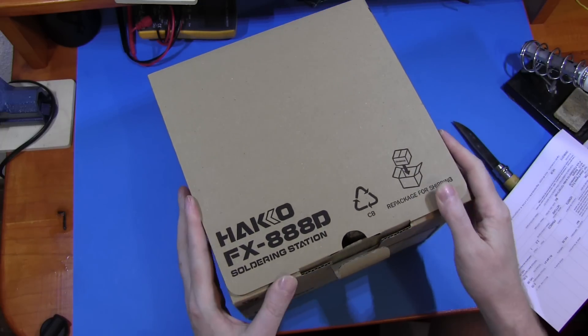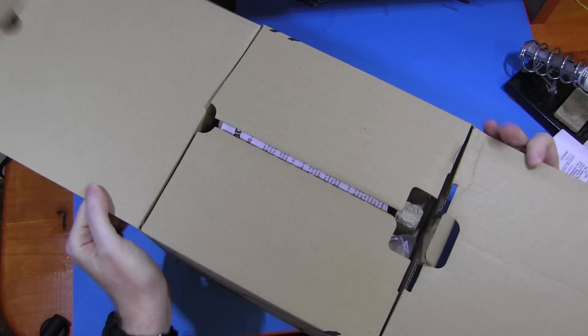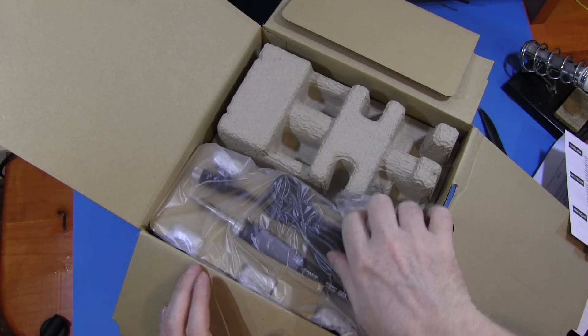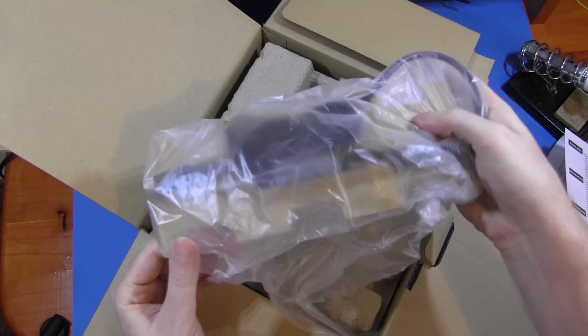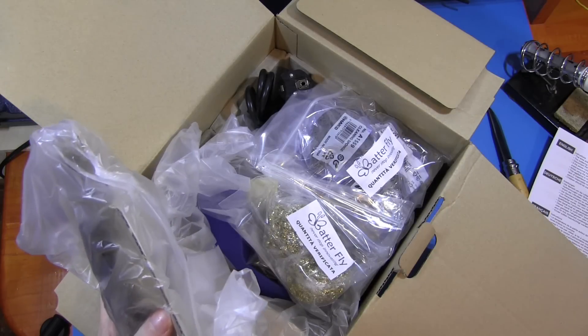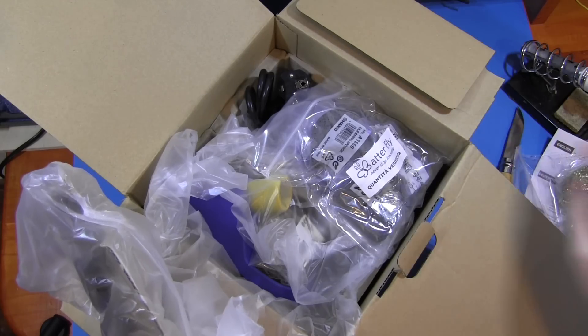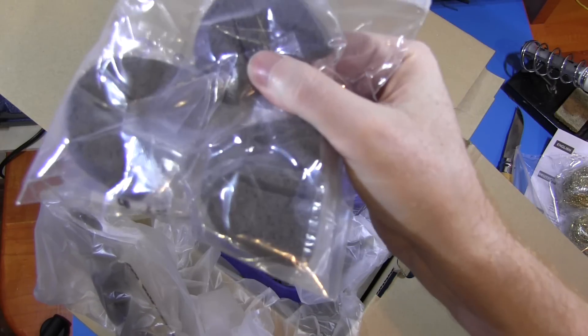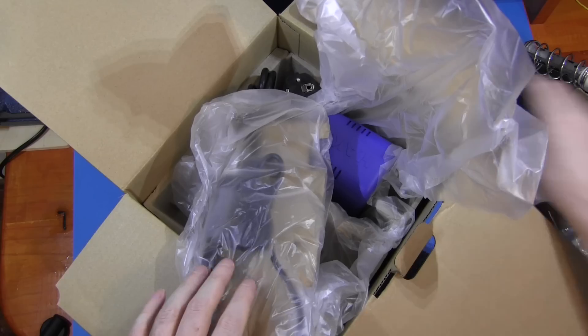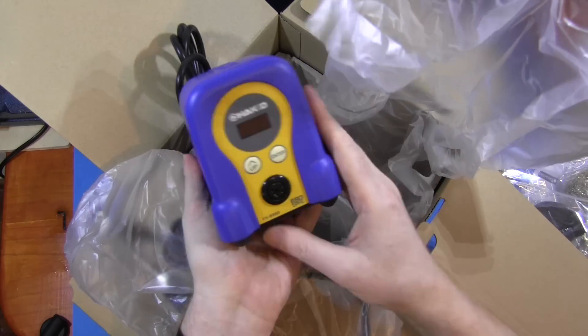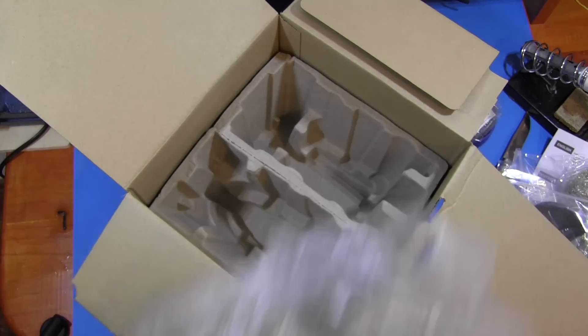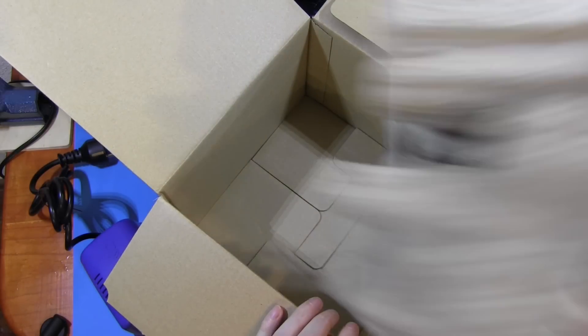Hakko FX-888 Digital. A few bits of paper, packing slips, stuff like that. Soldering iron. The wire thing for cleaning. Spare sponges. And the base. That's about it.